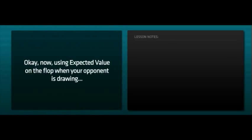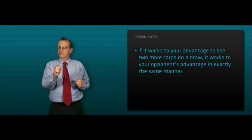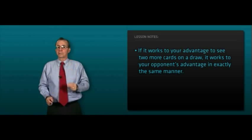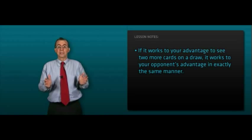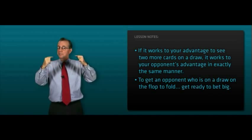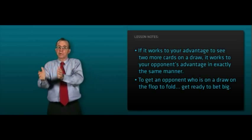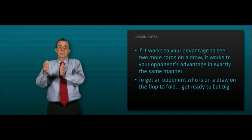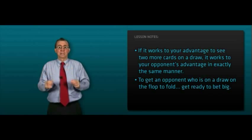Now, use expected value on the flop when your opponent is drawing. If it works to your advantage to see two more cards on a draw, it works to your opponent's advantage in exactly the same manner. To get an opponent who is on a draw on the flop to fold, get ready to bet big. But, as before, you want to bet enough to get him to fold immediately, but not so much that you lose everything if he's not on a draw but had a better hand than you thought right now.